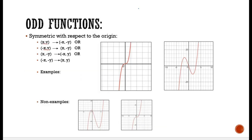Odd functions are symmetric with respect to the origin — that's the zero, zero point. As far as folding, if you can fold it vertically across the vertical and then the horizontal and they match, then it would work. So if you can visually fold it two ways — vertical and horizontal — and the two sides match, it is odd.